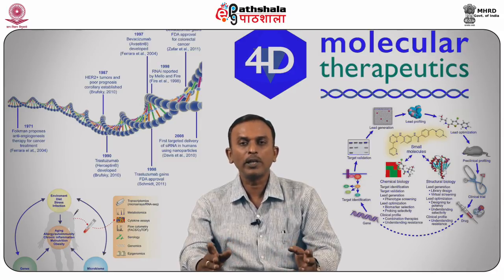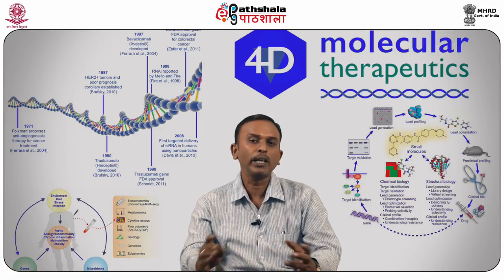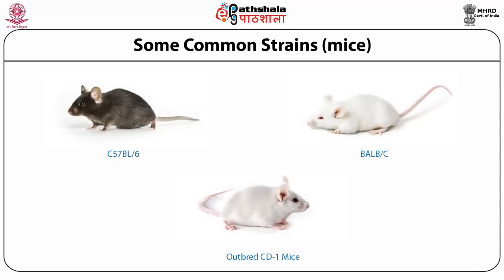Common strains used in immunological, toxicological, or genetic studies include C57BL/6 as the most commonly used, followed by BALB/c. The outbred strain CD1 is also used for many toxicological studies. C57BL/6 and BALB/c are inbred mice used mostly for immunological and genetic research, while CD1 is an outbred mouse used for toxicology studies.